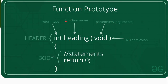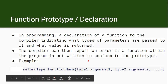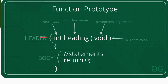Here is a pictorial representation of a function prototype. You can see that 'int' is the return type, 'heading' is the function name, and 'void' indicates the function has no parameters. When writing the function as a prototype declaration, it ends with a semicolon. This is distinct from the function definition.